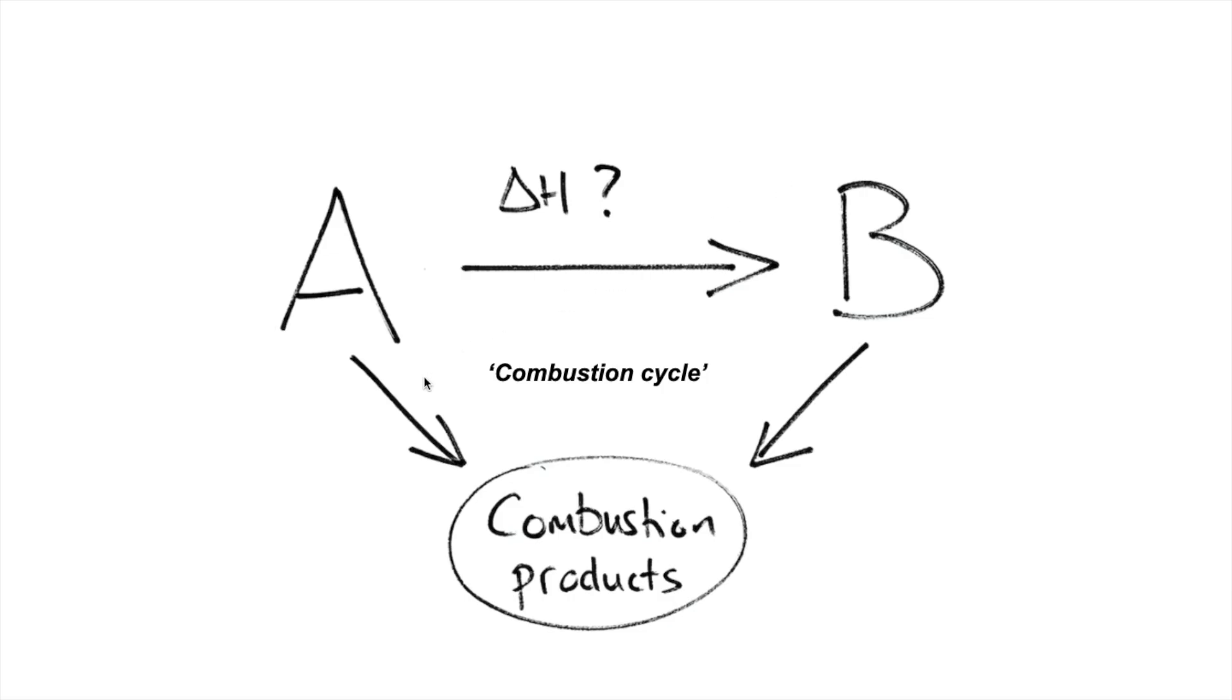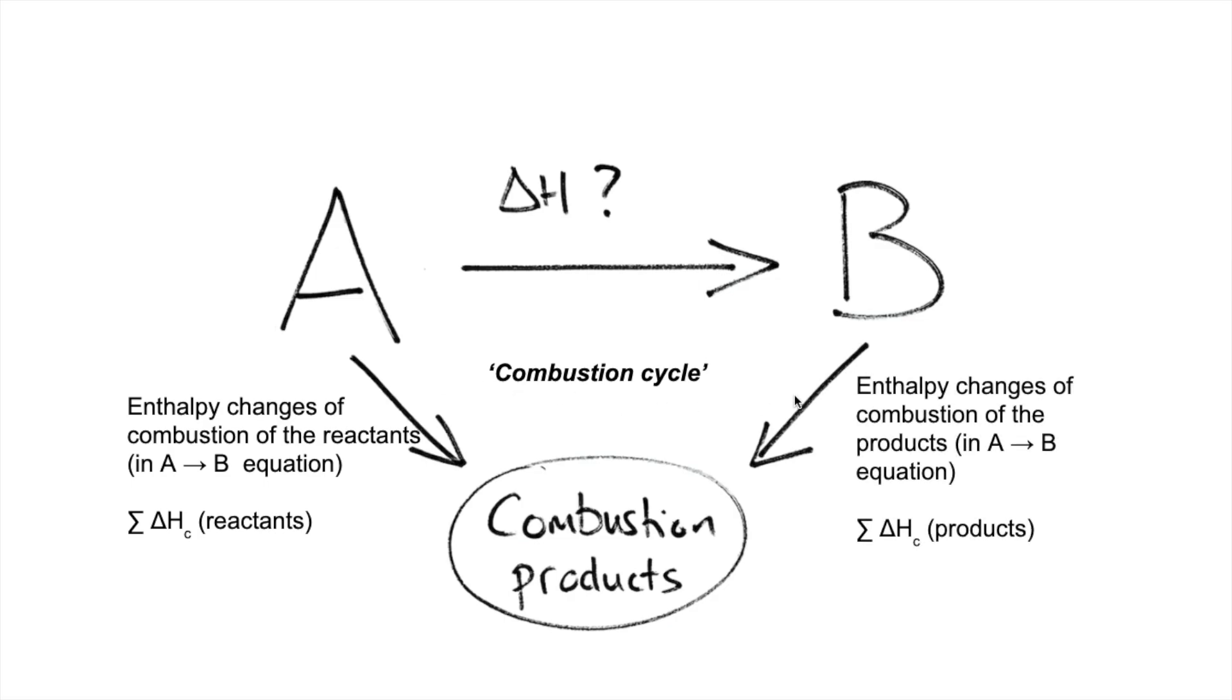This arrow here represents the sum of the enthalpy changes of combustion of the reactants, and the other arrow, this one here, represents the enthalpy changes of combustion for the products.